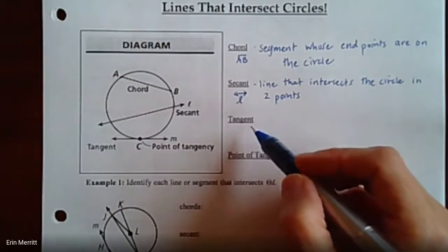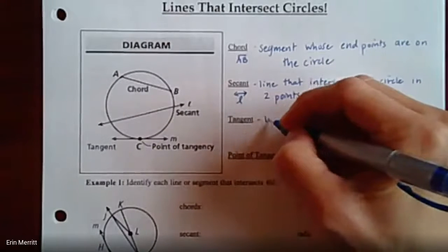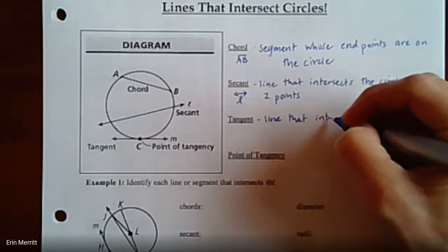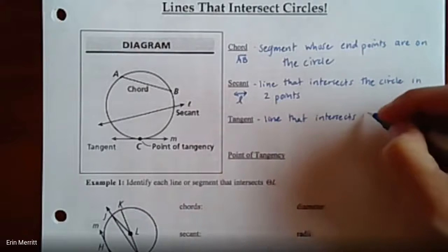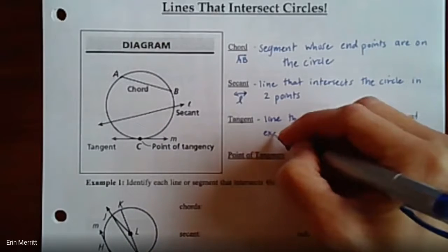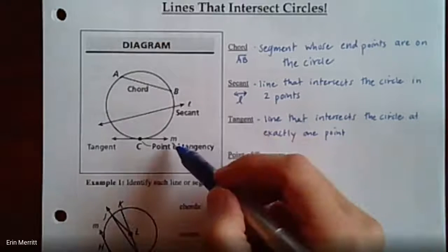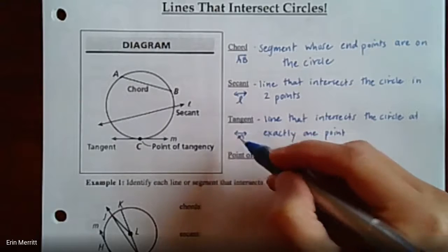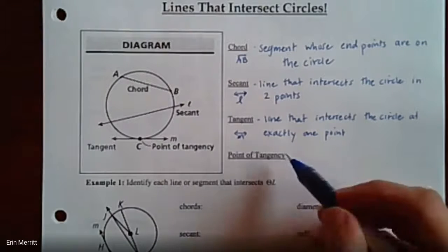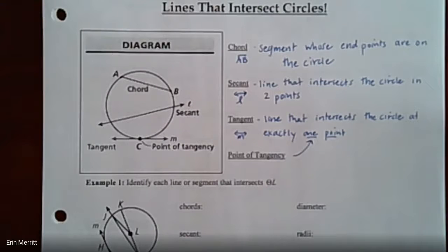A tangent: we say a line is tangent to a circle if it touches it in just one point. So a tangent is the line that intersects the circle at exactly one point — in the picture that would be line M. The point of tangency is that one specific point where the tangent touches the circle. If the video moves too quick, just pause and pick back up when you're ready.